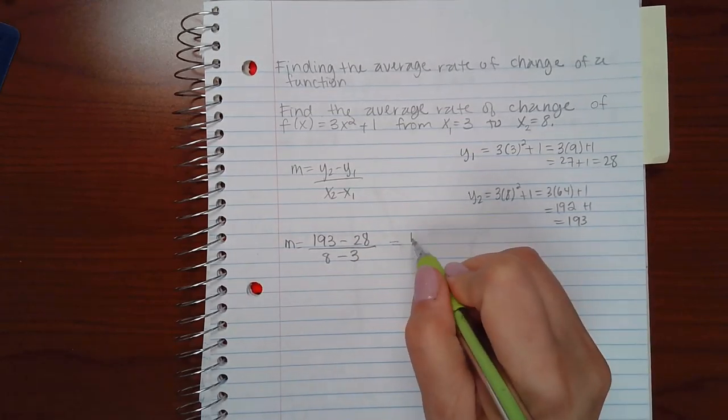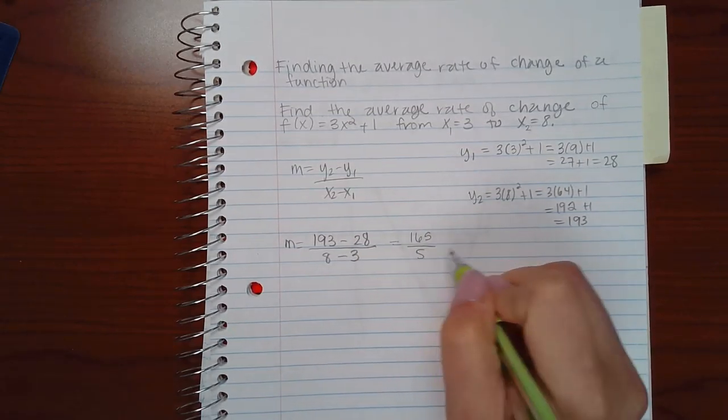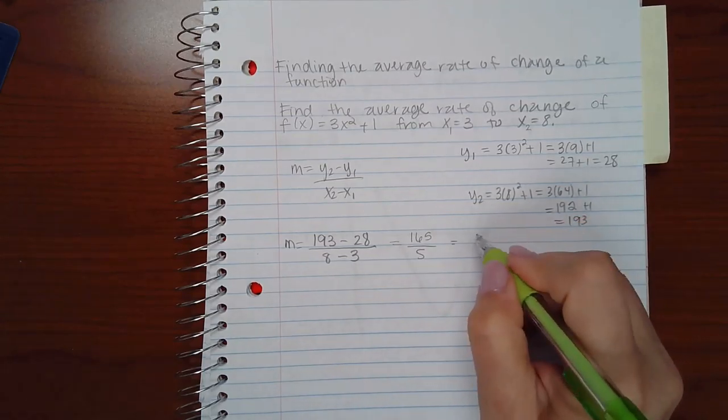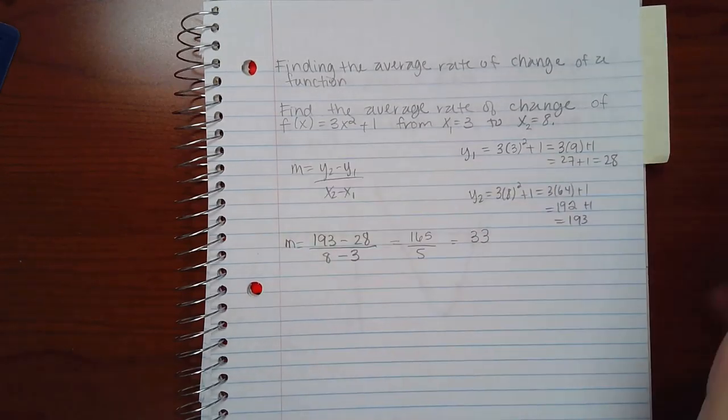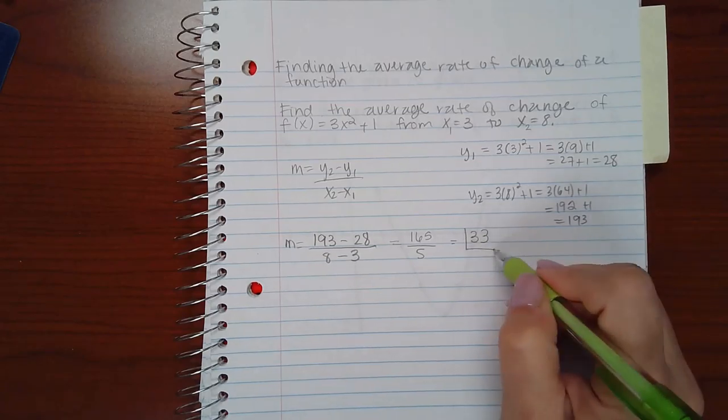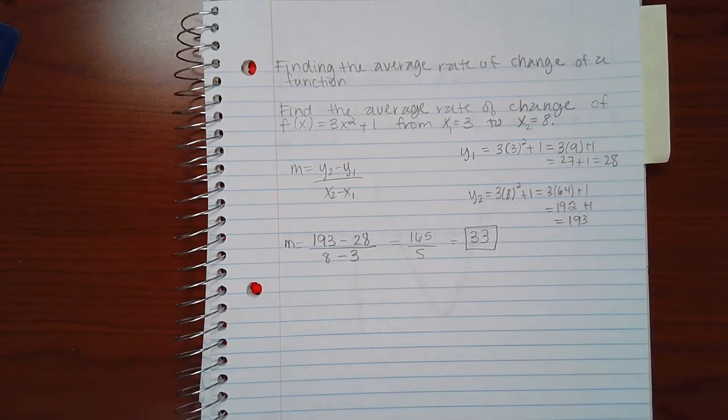So we end up with 165 over 5, which is equivalent to 33. So the average rate of change is 33 units.